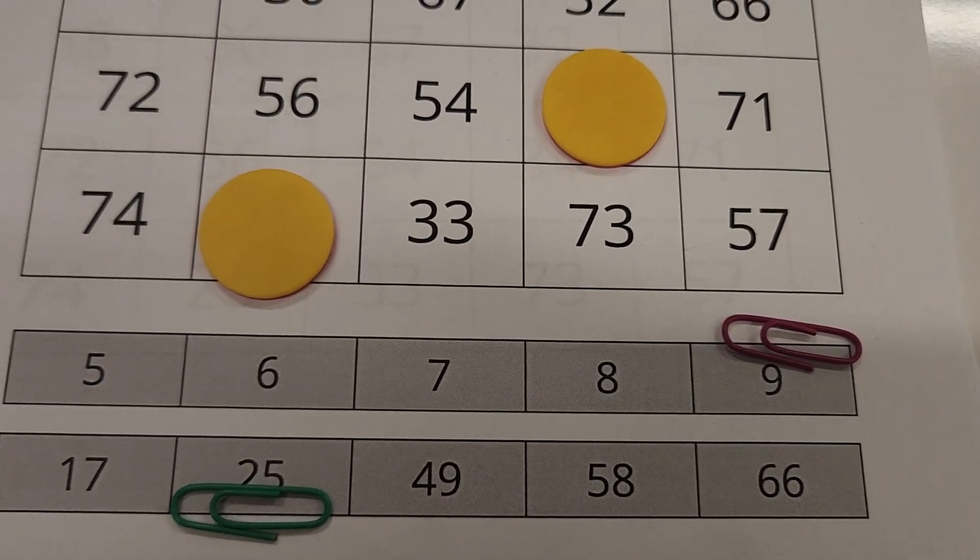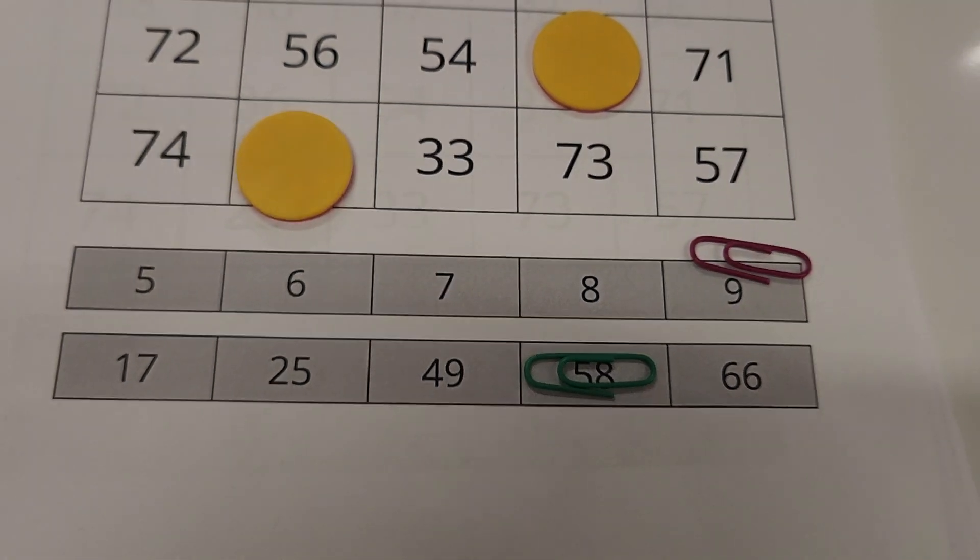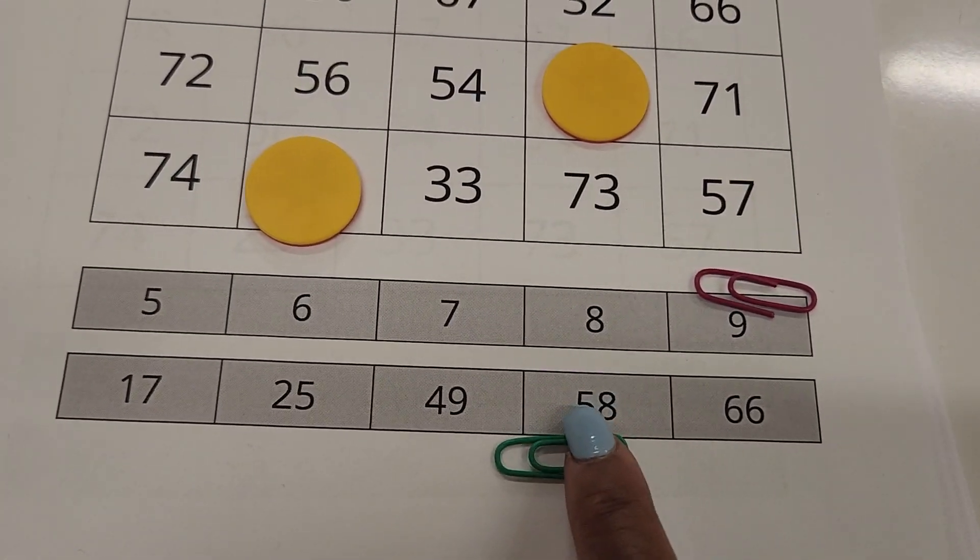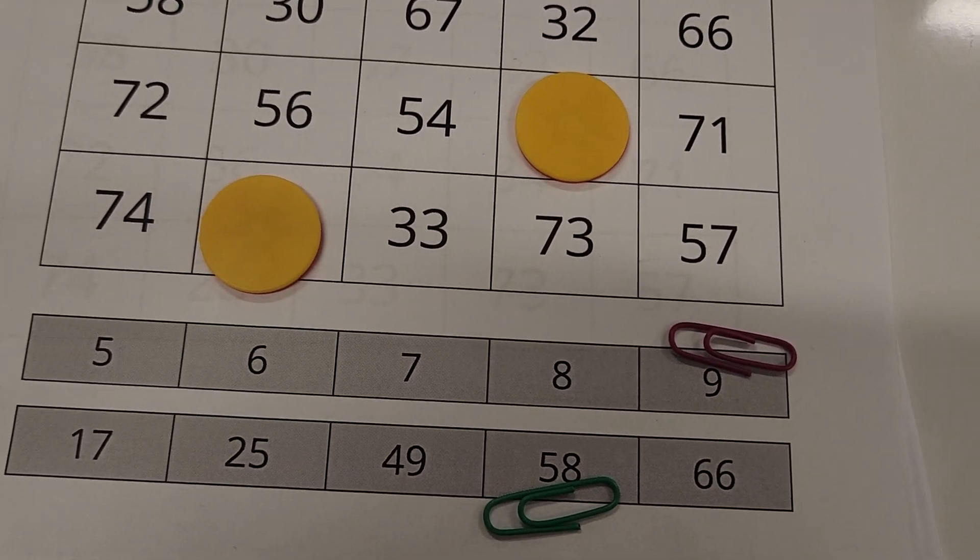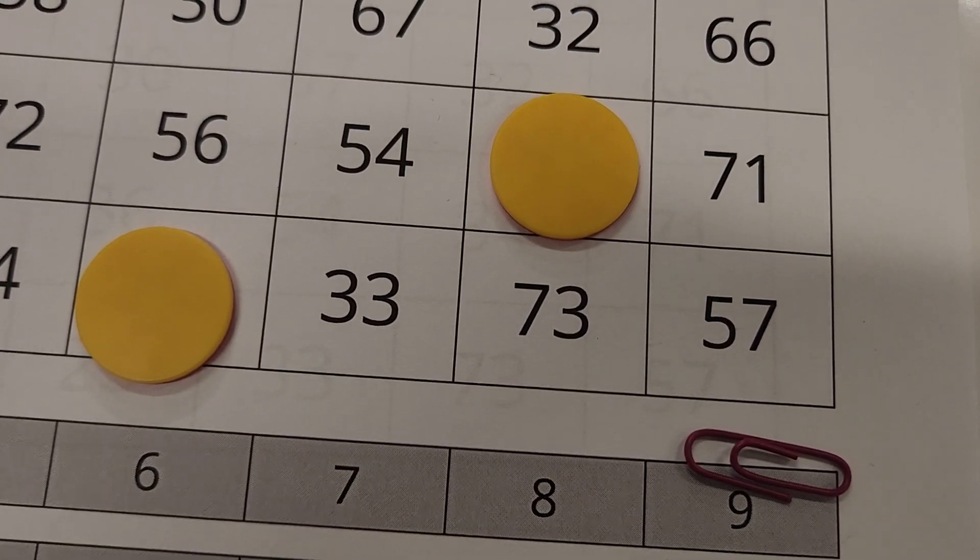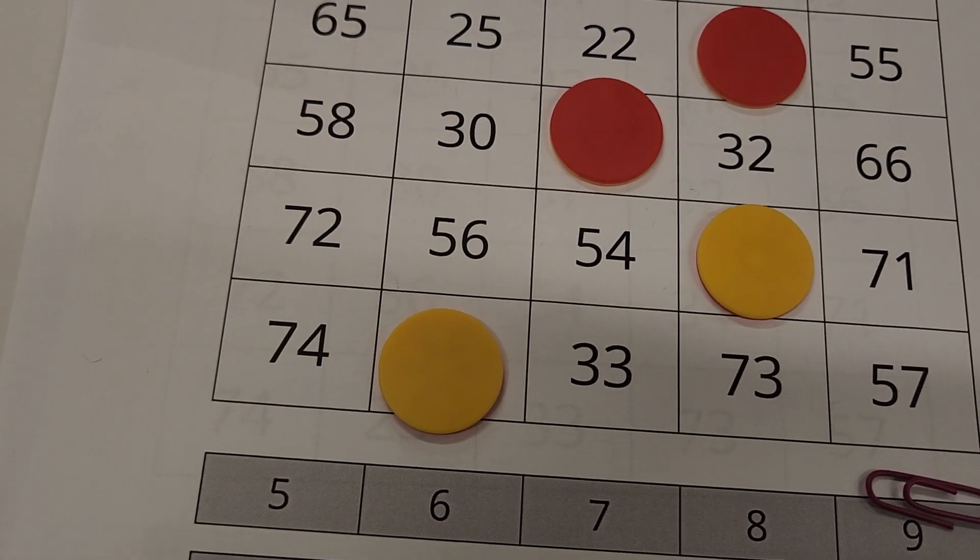Your turn, Delilah. You can move yours. Great. So now, what are you adding? You're adding fifty-eight plus nine. So what is fifty-eight plus nine? Sixty-seven. Sixty-seven. Excellent. So you are now going to place your chip. Good job.